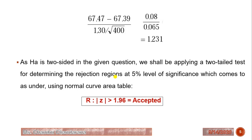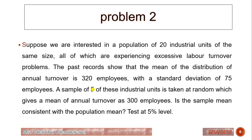Problem 2: Suppose we are interested in a population of 20 individual units of the same size, all of which are experiencing excessive labor turnover problems. Past records show that the mean of the distribution of annual turnover is 320 employees with a standard deviation of 75 employees. A sample of 5 units is taken at random, giving a mean annual turnover of 300 employees. We need to determine whether the sample mean is consistent with the population mean at a 5% level of significance.